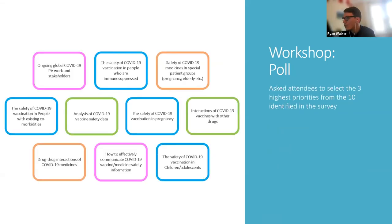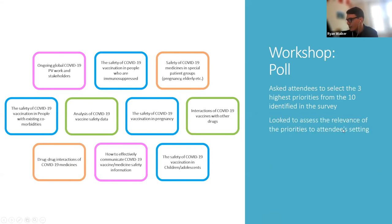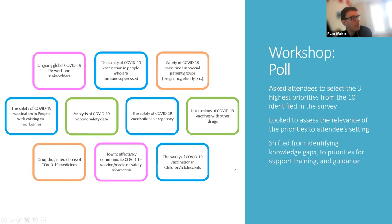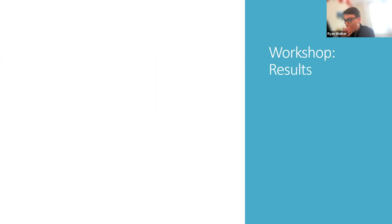We ran a workshop poll which sought to identify the three highest priorities from the 10 identified in the survey. We looked to assess the relevance of the priorities to the attendees' settings, and there was also a shift — in the survey we sought primarily to identify where the knowledge gaps lay, but now we looked to consolidate exactly what the priorities for support, training, and guidance were, and to validate that knowledge gap approach to identifying priorities. We had some technical glitches at the end of the workshop in relation to the poll, so we ran a post-workshop survey to gather data from those who weren't able to see the poll.